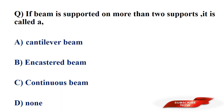If a beam is supported on more than two supports, it is called? Options: cantilever beam, encastered beam, continuous beam, none of those. Answer: option C, continuous beam. A beam supported on more than two supports is called a continuous beam.